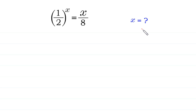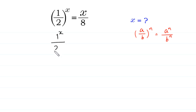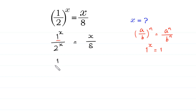According to this property of exponents, (a/b)^n = a^n / b^n, we can write (1/2)^x as 1^x over 2^x, which equals x over 8. Now, 1 to the power x is equal to 1, so we replace 1^x with 1, giving us 1 over 2^x is equal to x over 8.